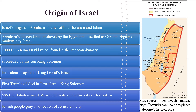According to the Hebrew Bible, Israel's origin can be traced back to Abraham, who was considered the father of both Judaism and Islam. Abraham's descendants were thought to be enslaved by the Egyptians for hundreds of years before settling in Canaan, which is approximately the region of modern-day Israel. King David ruled the region around 1000 BC and founded the Judean dynasty. He was succeeded by his son King Solomon. Jerusalem was the capital of King David's Israel in the Hebrew Bible. David's son Solomon built the first temple of God in Jerusalem, which was destroyed along with the entire city of Jerusalem by the Babylonians in 586 BC.